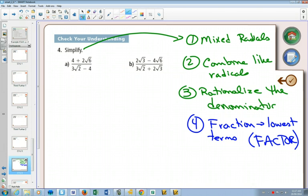So part A. We look at the radicals that we have, root 6 and root 2.